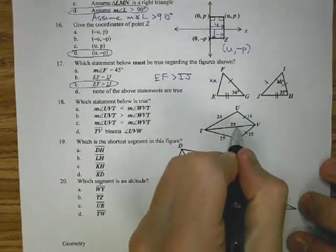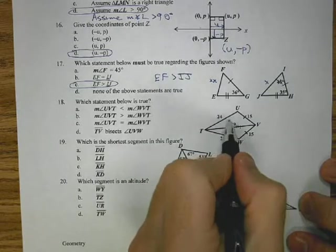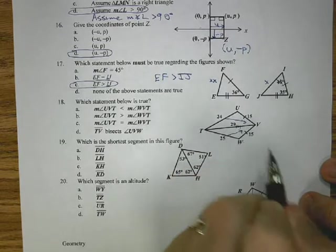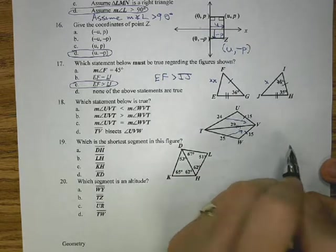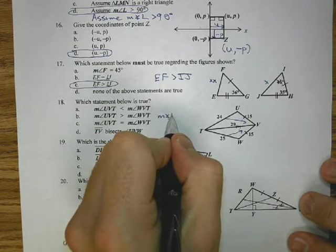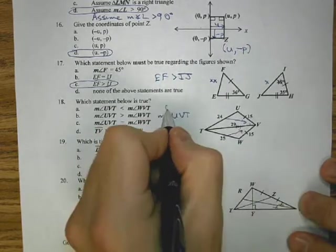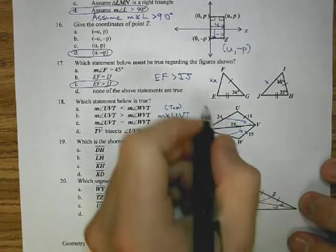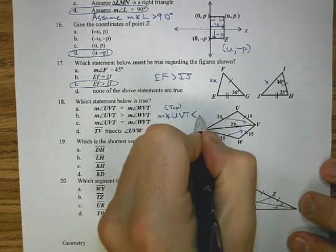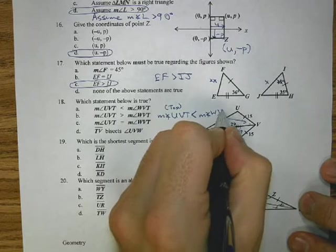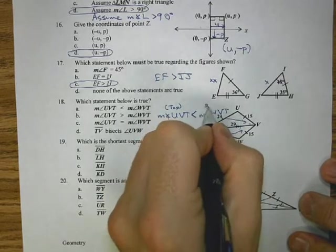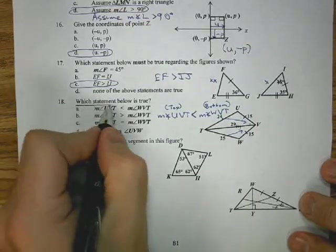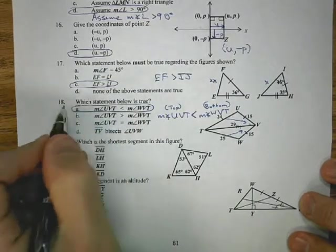The same idea applies on 18. I have Z sides with 15, I have 29 on both. One angle opens to a 24 side, the other opens to a 25. So that means if I take the measure of angle UVT, which is the top one, since that opens to a 24 and the other one to a 25, I know the 25 is going to be bigger. And we're going to call that angle WVT, which is the bottom.